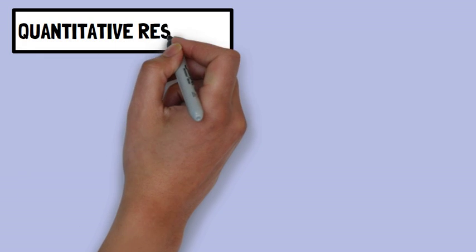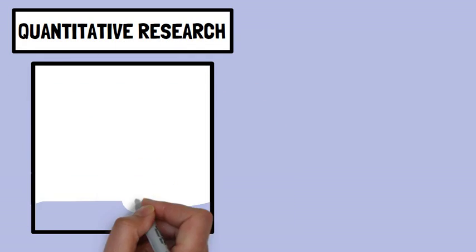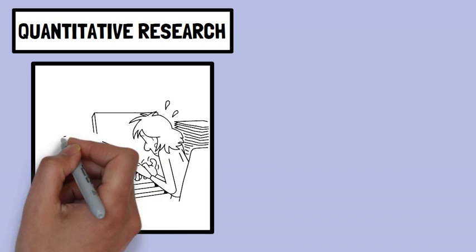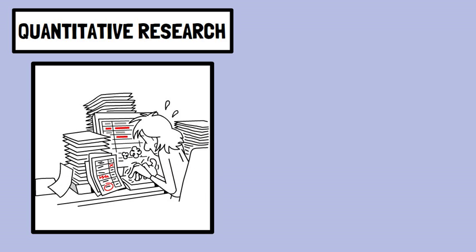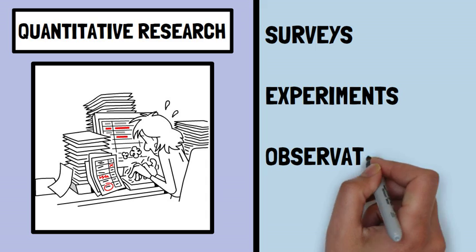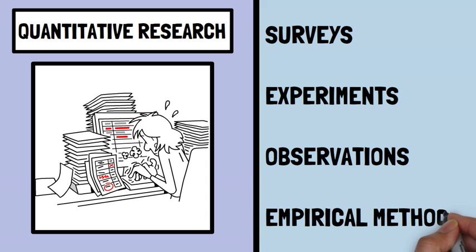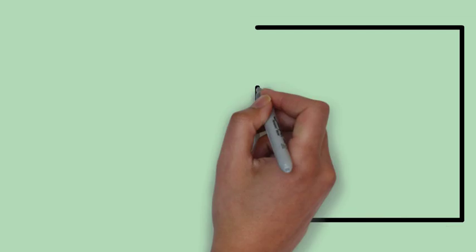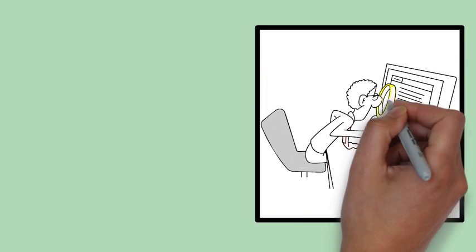Quantitative research is a type of research that aims to quantify variables in a systematic and statistical manner. It involves collection of numerical data using surveys, experiments, observations, or other empirical methods. The researcher analyzes this data using statistical software and draws inferences based on the patterns found.